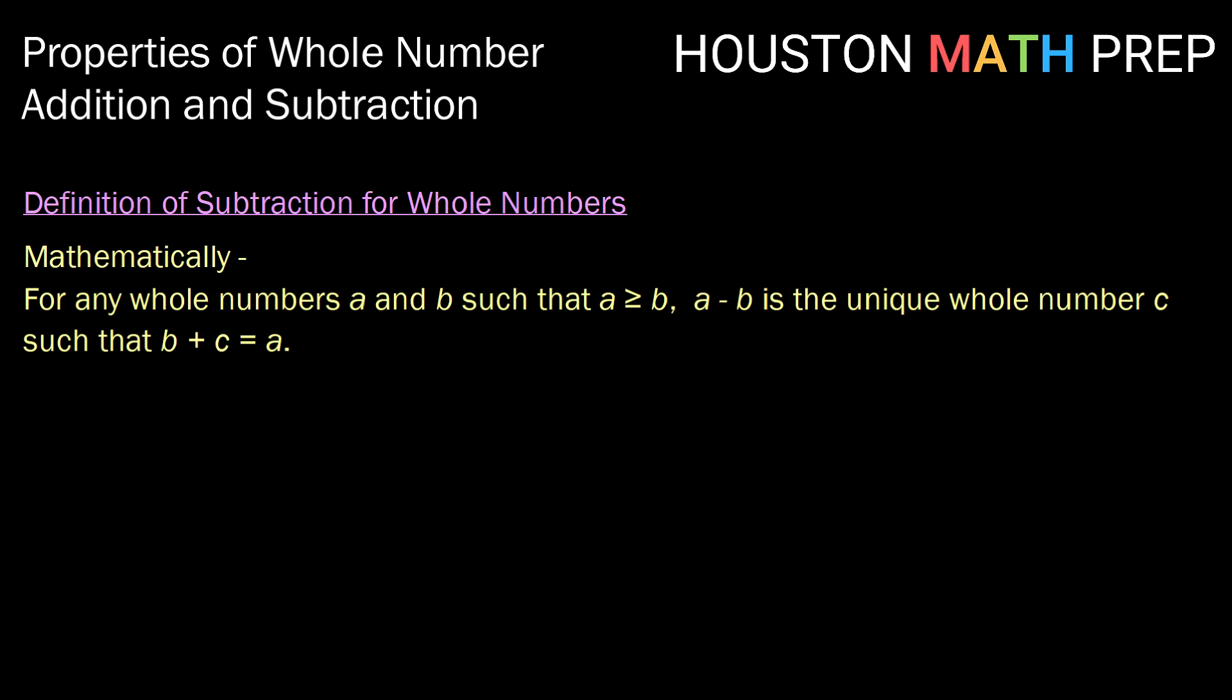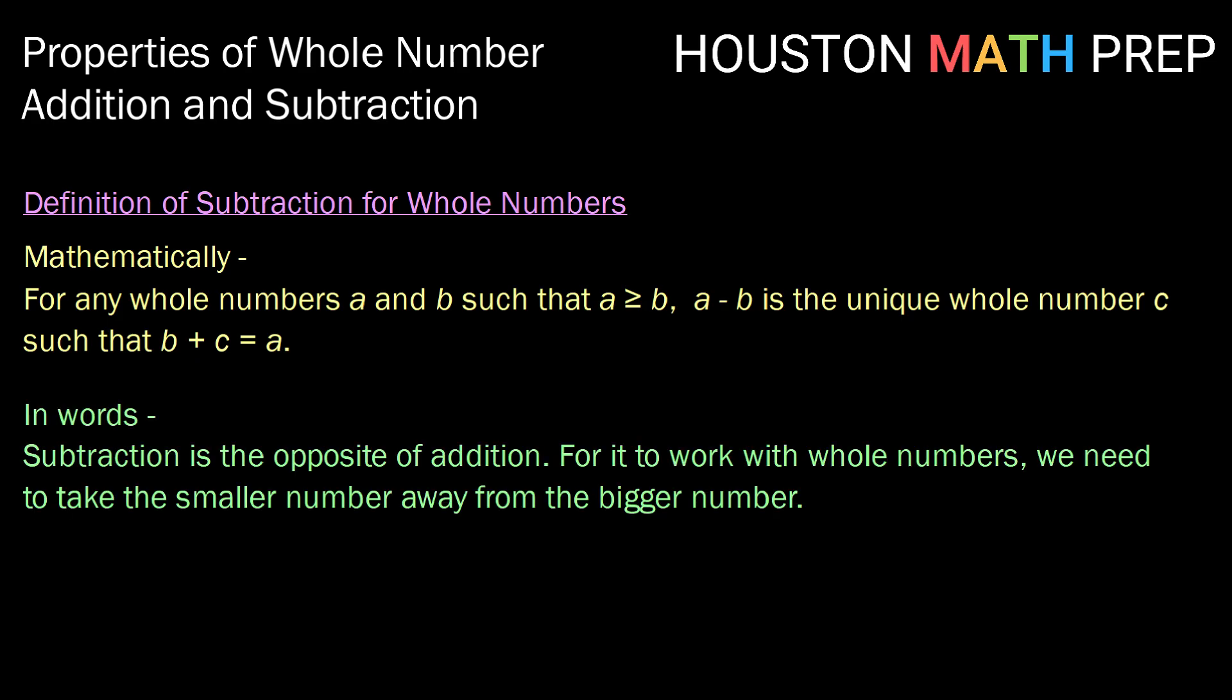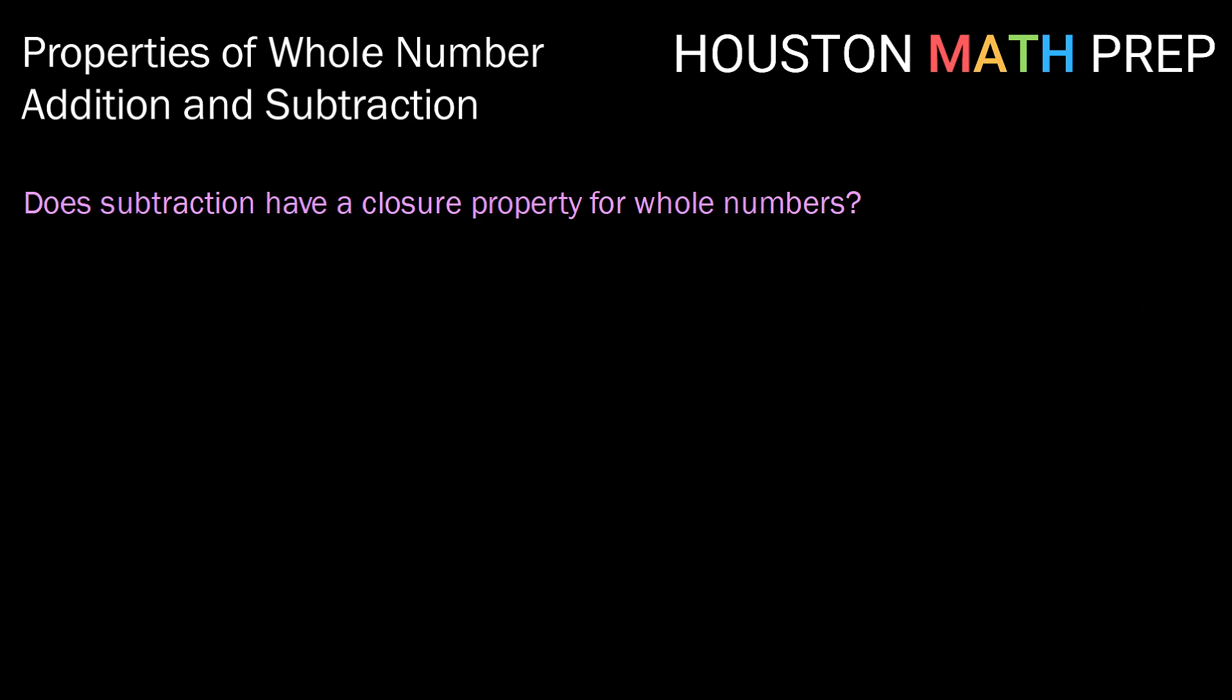So that's our definition for subtraction for whole numbers. So we want to say, in other words, subtraction is the opposite of addition. But in order for it to work with whole numbers, we need to take the smaller number away from the bigger number. So now we want to think about, does subtraction have all the same properties of addition? Well, let's go through them and see.